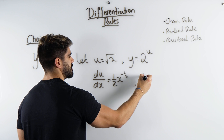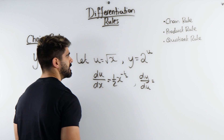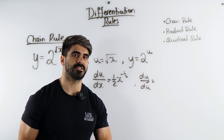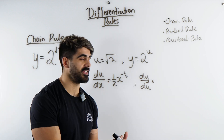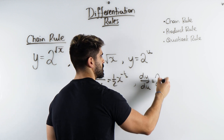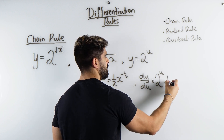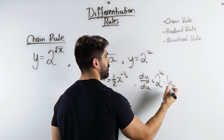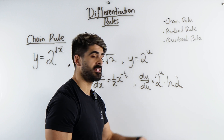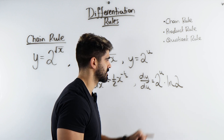Then we're going to differentiate y with respect to u. Now all exponentials differentiate to themselves — e to the x differentiates to e to the x — so 2 to the u will differentiate to 2 to the u. But we have to multiply by ln of the base. That actually works with e as well, but ln of e is just 1, so that's why e to the x goes to e to the x.